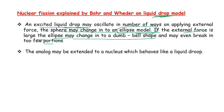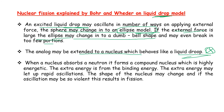The analogy is extended to a nucleus which behaves like a liquid drop. When the nucleus absorbs a neutron, it forms a compound nucleus which is highly energetic. The extra energy comes from the binding energy, described by the semi-empirical formula. This extra energy causes rapid oscillations, and if the oscillations are violent enough, the result is fission.